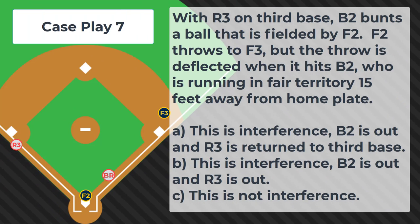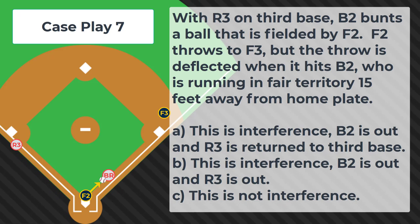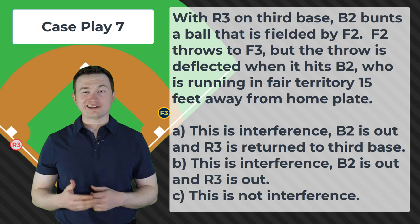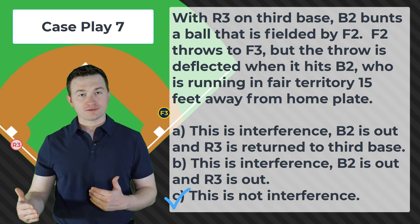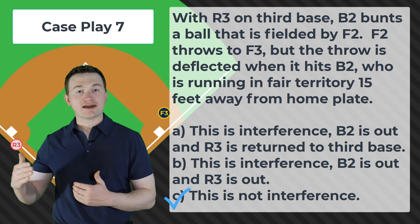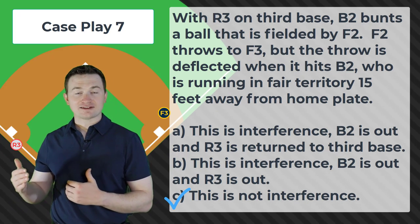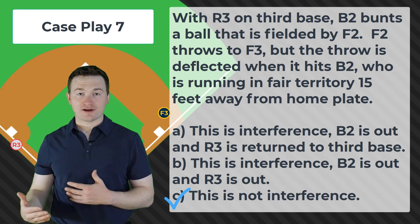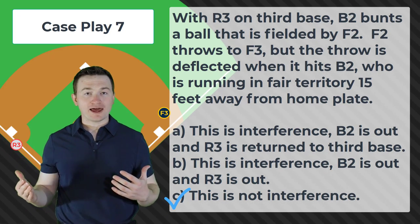Case play number seven. With R3 on third base, B2 bunts a ball that is fielded by F2. F2 throws to F3, but the throw is deflected when it hits B2, who is running in fair territory 15 feet away from home plate. Is this A — interference, B2 is out and R3 is returned to third; B — interference, B2 is out and R3 is out; or C — this is not interference? The correct answer is C, this is not interference. We need to remember that the runner's lane rule only comes into effect halfway between home and first. With the high school base paths being 90 feet, that means the last 45 feet is when the runner's lane rule applies. Since the batter runner is only 15 feet away from the plate, they're not in that last half of the runner's lane. The only interference that could happen on this play is intentional interference by the batter runner, but since we don't have that, this is a legal play and the play stands.